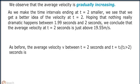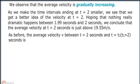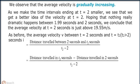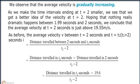We conclude that the average velocity at t equals 2 seconds is just above 19.55 meters per second. The average velocity v between t equals 2 seconds and t equals t2 seconds is the distance travelled between 2 seconds and t2 seconds divided by t2 minus 2. That equals the distance travelled in t2 seconds minus 19.6, divided by t2 minus 2.